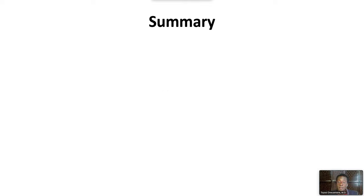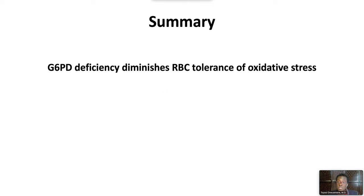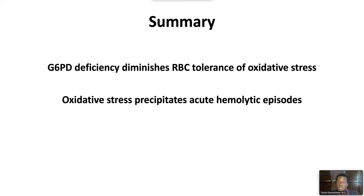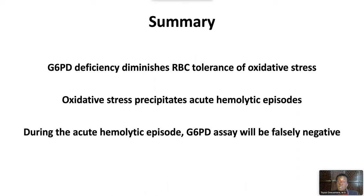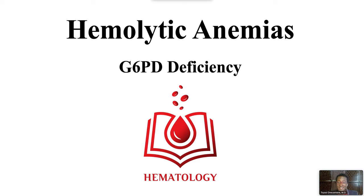In summary, G6PD deficiency diminishes red blood cell tolerance of oxidative stress. Oxidative stress precipitates acute hemolytic episodes. During the acute hemolytic episode, a G6PD assay will be falsely negative. This ends our video on hemolytic anemias, G6PD deficiency.